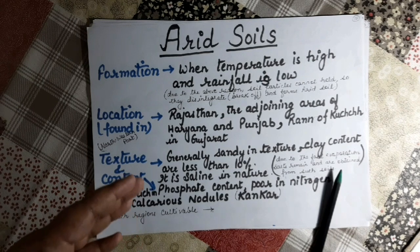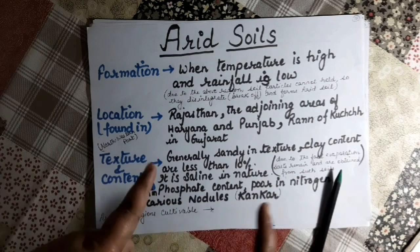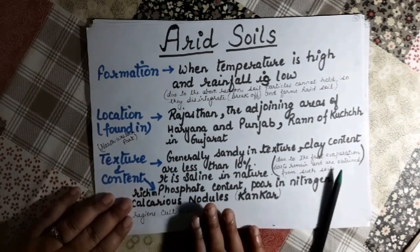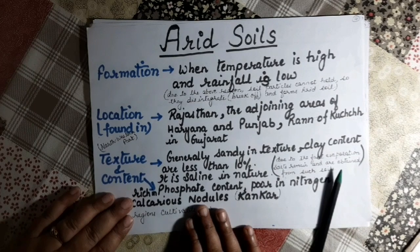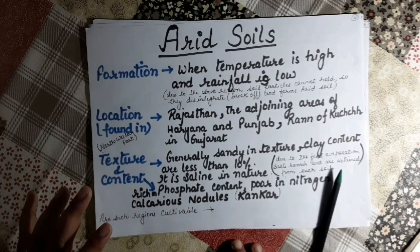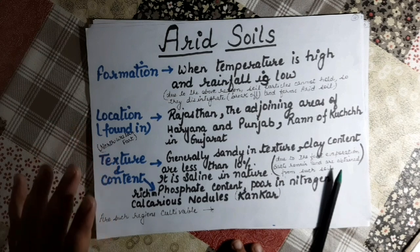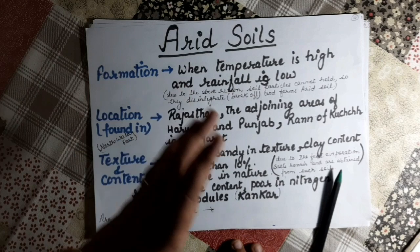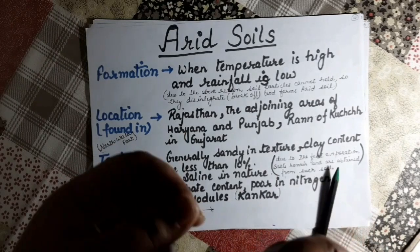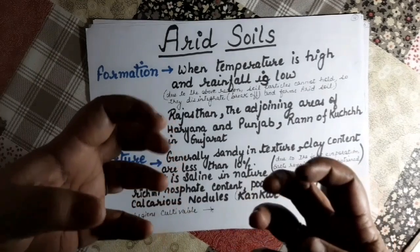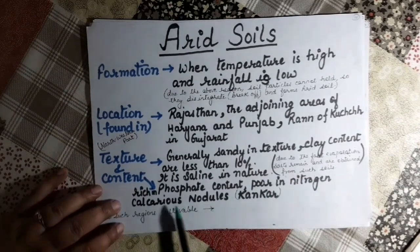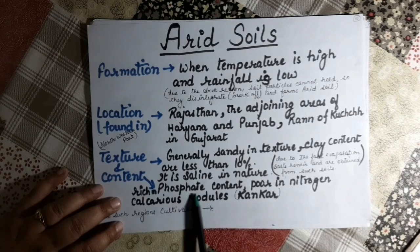Arid soil generally lacks moisture and humus due to the downward movement of calcium. The lower horizons are occupied by concretions which restrict infiltration of water. Content: it is very poor in nitrogen and organic matter, because moisture is unavailable and the sandy particles cannot hold each other. However, it is rich in phosphate content.